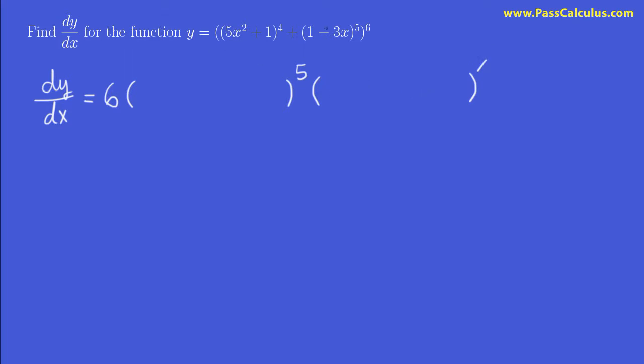And then afterwards I multiply by the derivative of everything that I'm ignoring. And what am I ignoring here? Well, the sum of these two terms here. 5x squared plus 1 to the power of 4 plus 1 minus 3x to the power of 5. And the same quantity goes in brackets over here.